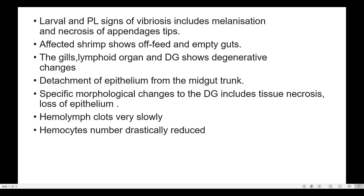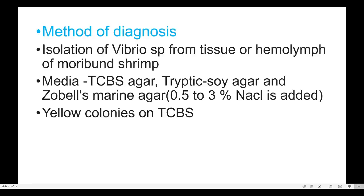Methods of diagnosis: isolation of Vibrio species from tissue or hemolymph of moribund shrimp. Media used include TCBS (thiosulfate citrate bile salt sucrose) agar, tryptic soy agar, and Zobell's marine agar. Yellow colonies appear on TCBS agar.